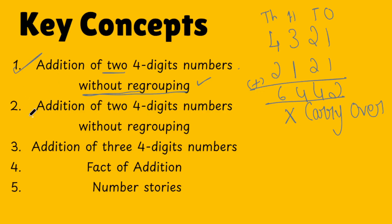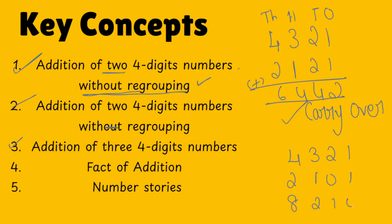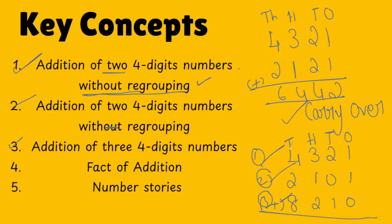The second topic is addition of two four-digit numbers with regrouping. With regrouping means we are going to do carry-over. Then the third topic is addition of three four-digit numbers. Let me take an example: first four-digit number, second four-digit number, then the third four-digit number — we are going to add all of these. There will be three four-digit numbers. Four digits are ones, tens, hundreds, and thousands. This is how you do addition of three four-digit numbers.